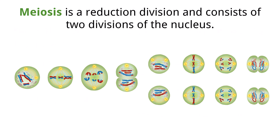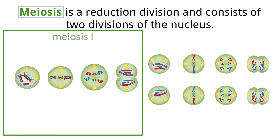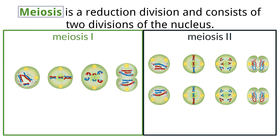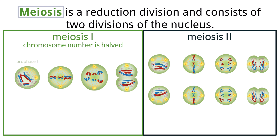Mitosis produces two genetically identical diploid cells, while meiosis produces four genetically different haploid cells. Meiosis is nuclear division in sex cells and consists of two stages: meiosis I and meiosis II. Meiosis is the process that reduces the number of chromosomes from diploid to haploid. The first stage, meiosis I, is when the chromosome number is halved. The names of the phases are the same as mitosis, with either a one or two added to identify which stage.